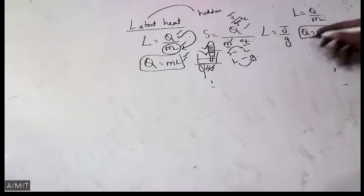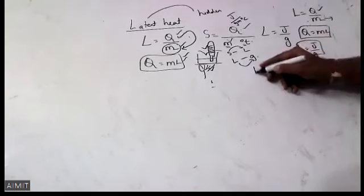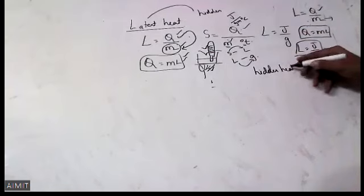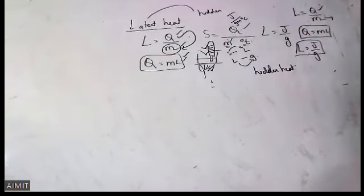Again, Latent Heat is the amount of heat energy required to raise the temperature of 1 gram of substance. Q is equal to mL is the formula for Latent Heat, and the units are Joules per gram. Latent Heat is Hidden Heat. Why is it called Hidden Heat? Because it is not recorded in the thermometer — all the heat is used in breaking the bonds from solids to liquids, liquids to gas.